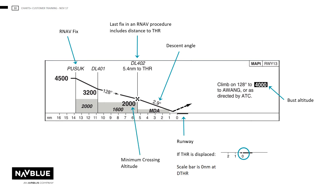If the minimum crossing altitude and obstacle altitude are the same, the italic text will be omitted. The scale bar at the bottom shows distances in nautical miles from the threshold or displaced threshold. NAVBLUE will not show distances after the threshold or displaced threshold.